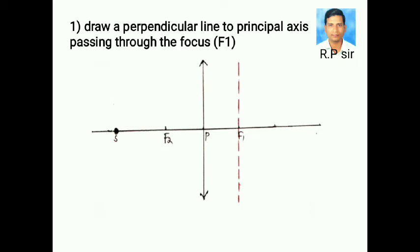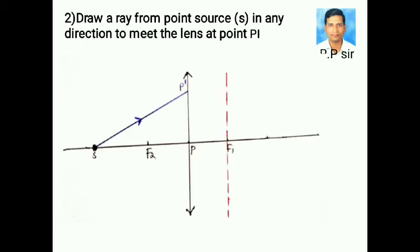Let us draw a perpendicular line to principal axis at focus. Next, draw a ray from point source in any direction to meet the lens at point P dash.